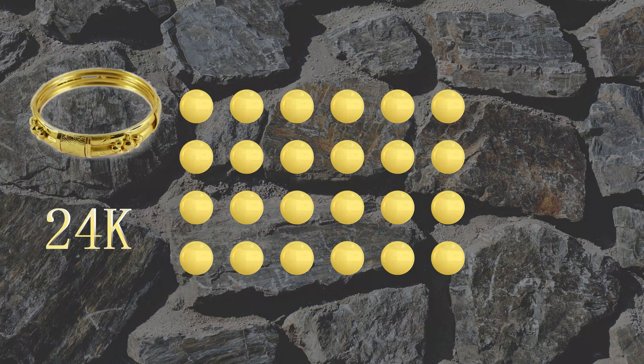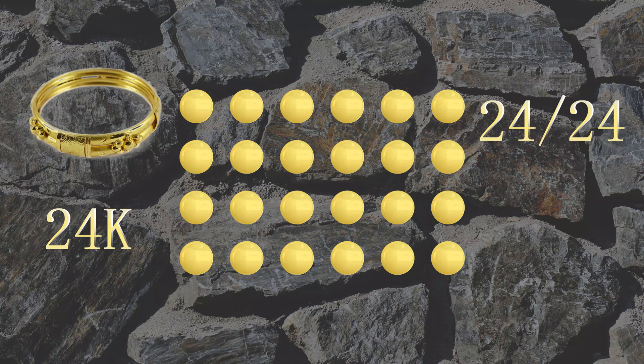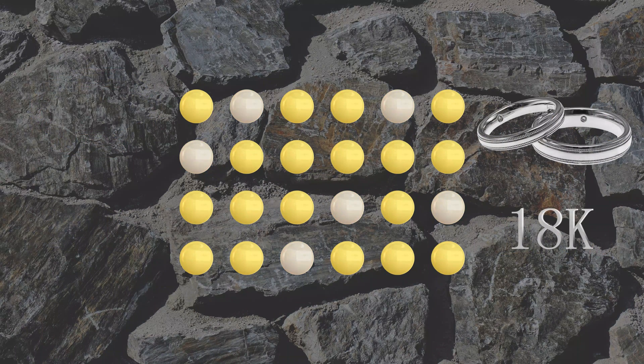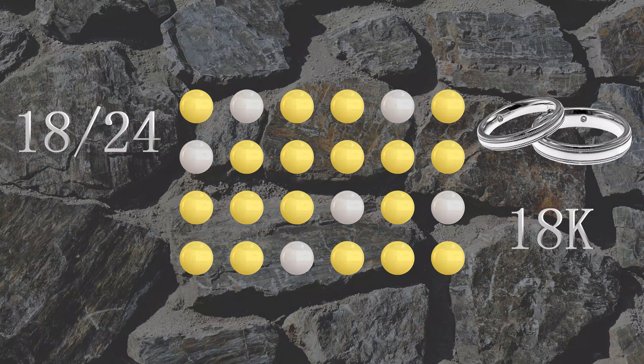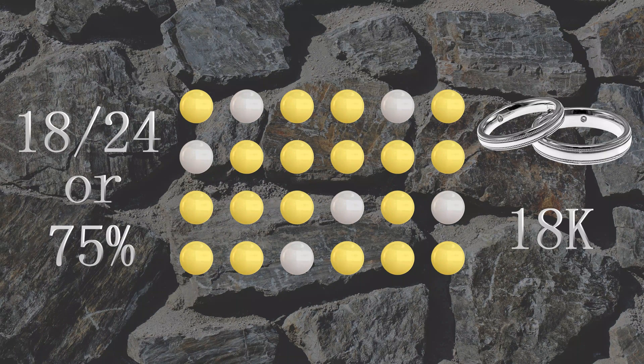Only 24 karat gold is pure. 24 karats means the gold is 24 out of 24 parts gold, or 100%. Whereas 18 karat gold will be 18 out of 24 parts gold, or 75%.